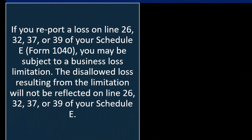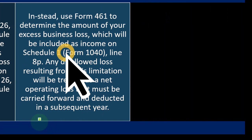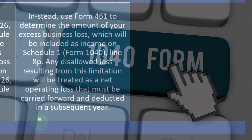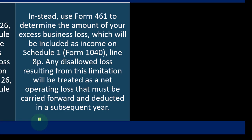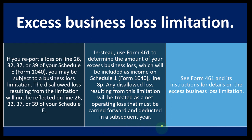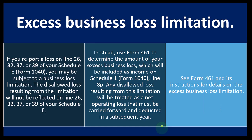The disallowed loss resulting from the limitation will not be reflected on line 26, 32, 37, or 39 of your Schedule E. Instead, use Form 461 to determine the amount of your excess business loss, which will be included as income on Schedule 1, Form 1040, Line 8P. Any disallowed loss will be treated as a net operating loss carried forward and deducted in a subsequent year. See Form 461 and its instructions for details.